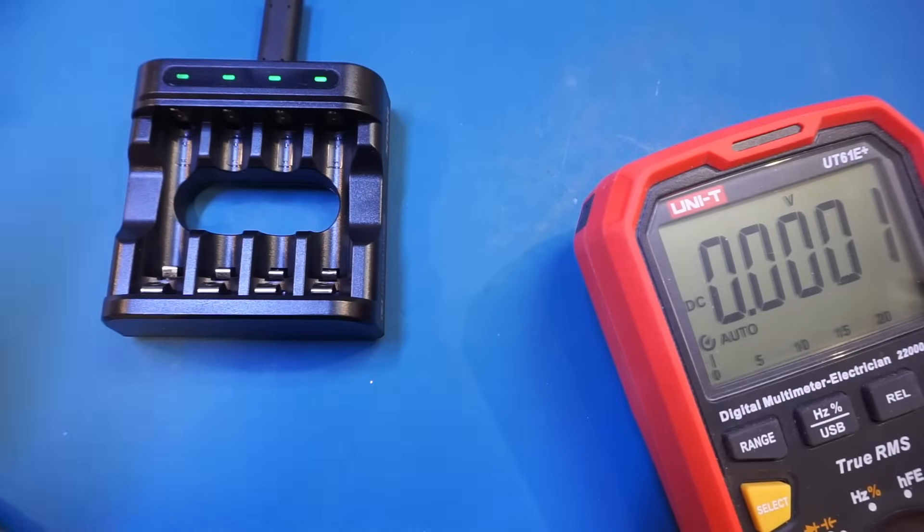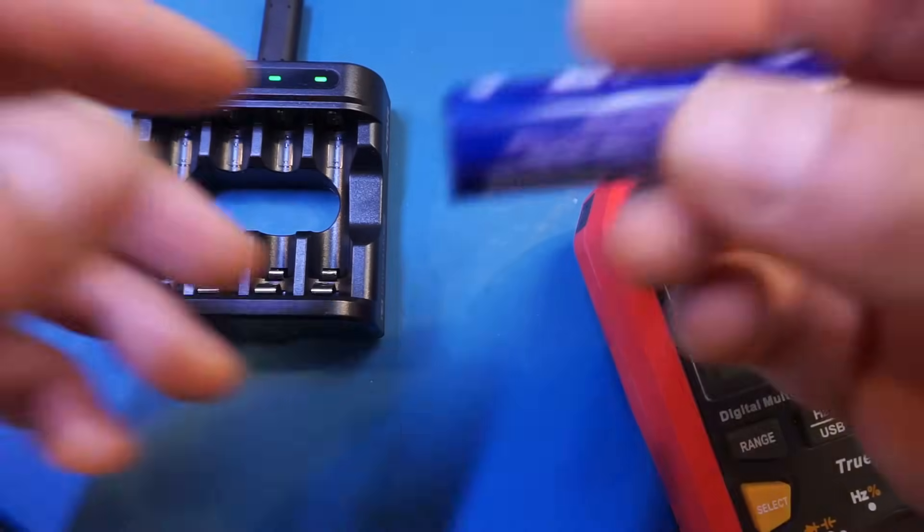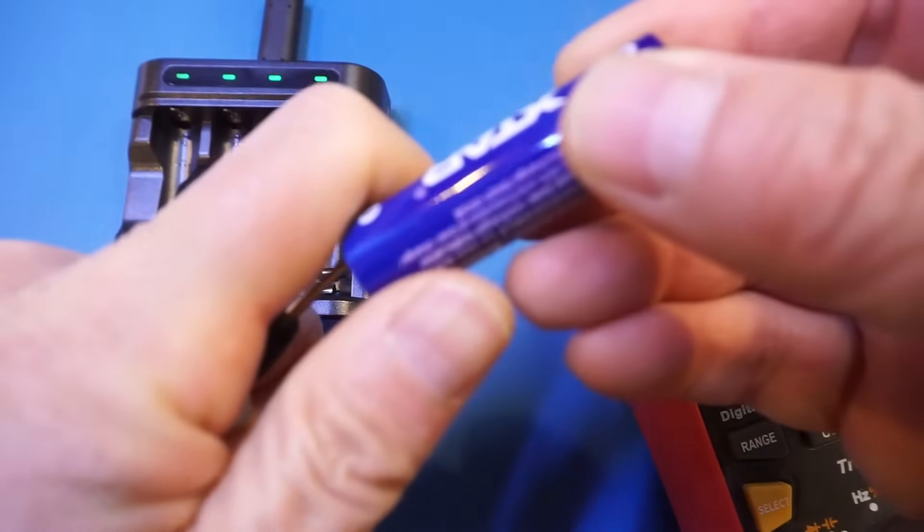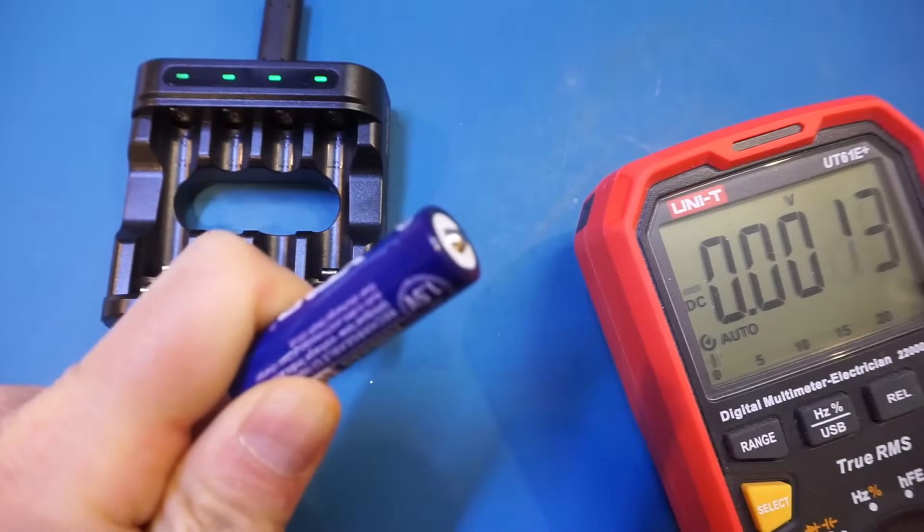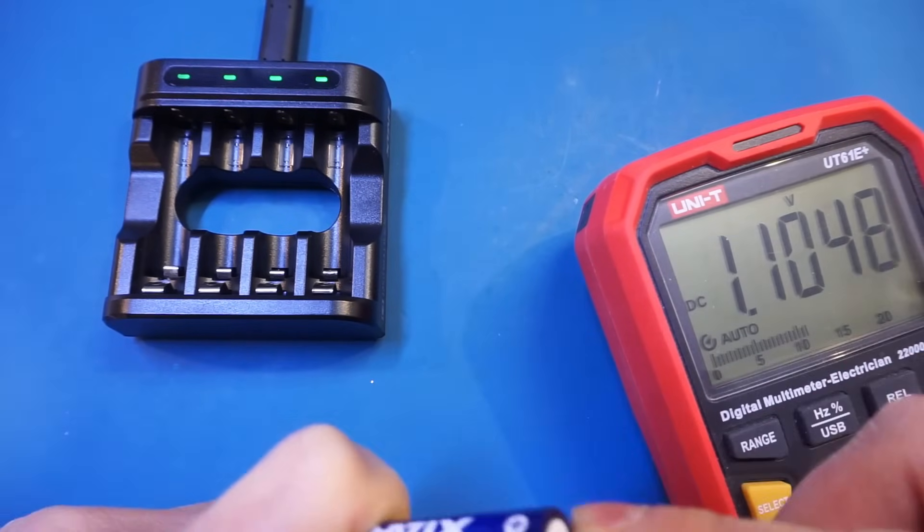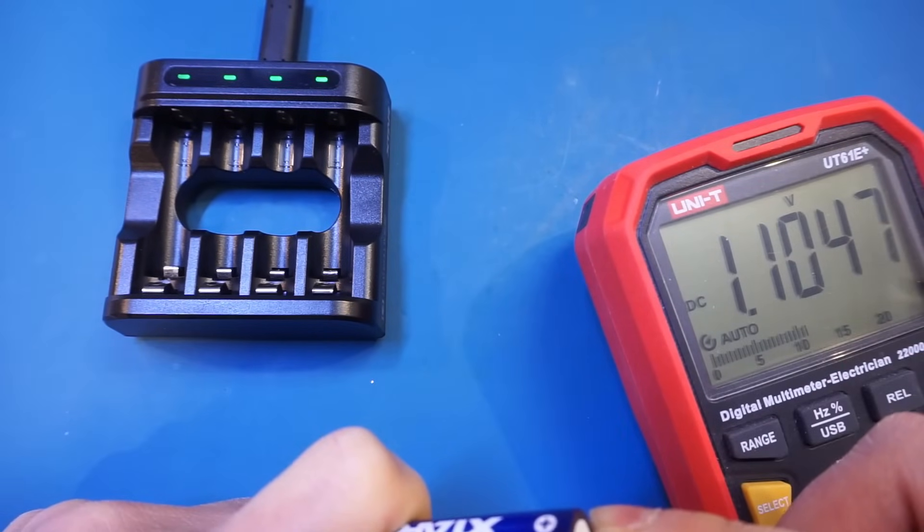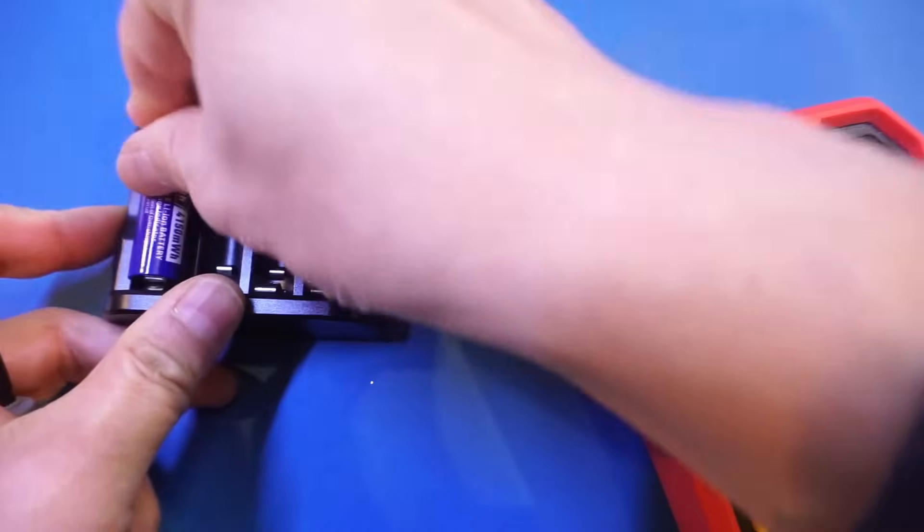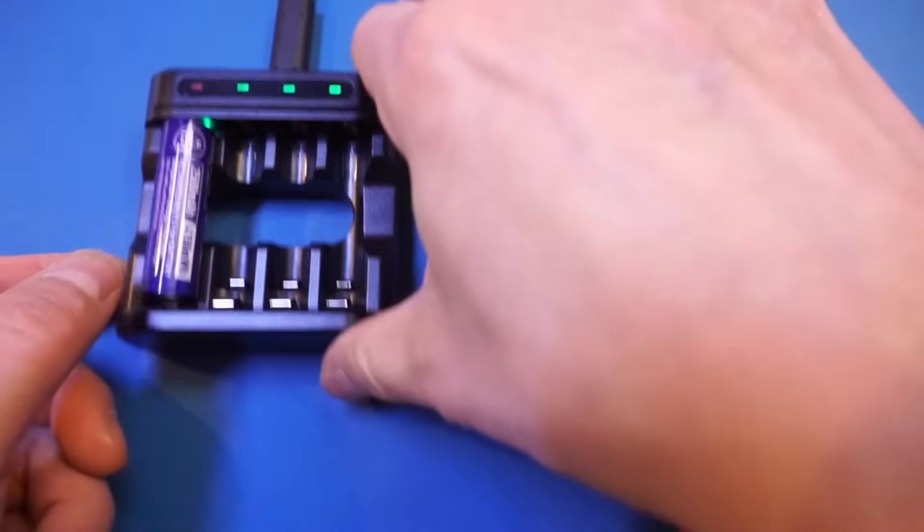So let's take a look at the battery charger provided by XTAR. And here I have a battery that is completely drained that I tested earlier. So let's take a look at the terminal voltage here. And you can see it's 1.1V as the spec specified. So let's put it in.